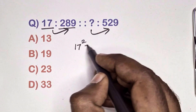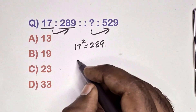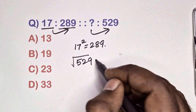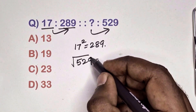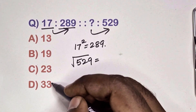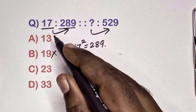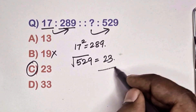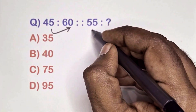Find the relation between this pair. 17 squared is 289. What is the square root of 529? The last digit is 9, so the square root ends in 3 (since 3 times 3 is 9). Checking possibilities A, B, C — the answer is 23.